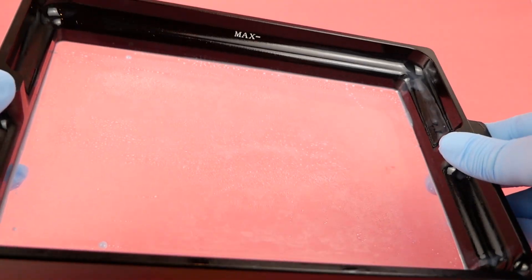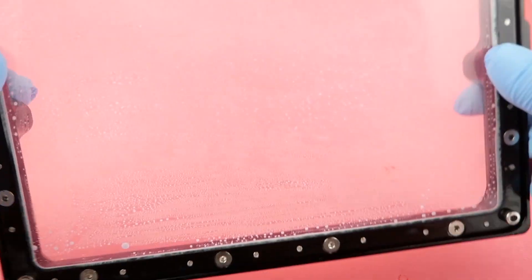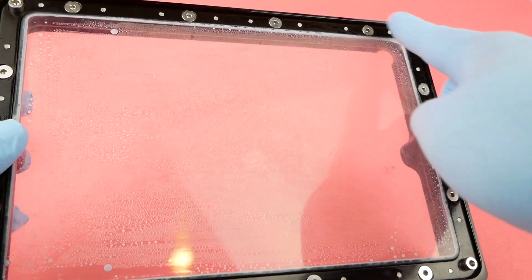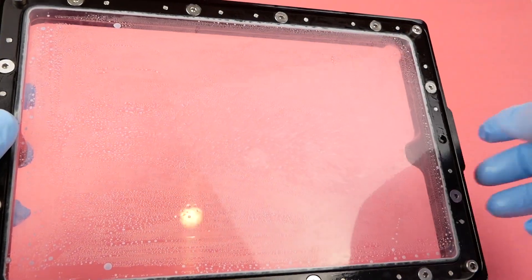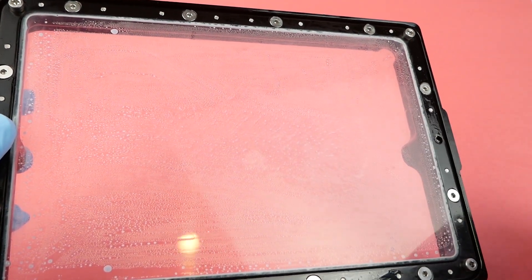My working hypothesis is that I accidentally damaged the metal build plate when I was trying to remove a particularly stubborn print, and that damaged the FEP film. So I replaced the build plate, which you can buy separately, luckily, and they're not that expensive. And now I'm going to replace this film by removing all these bolts all around the edge here with an Allen wrench.